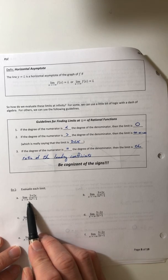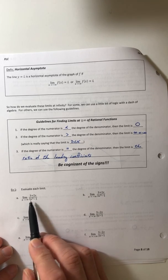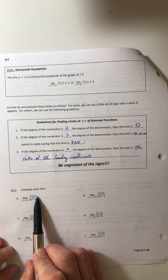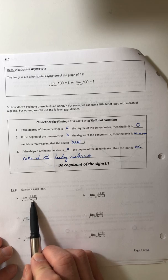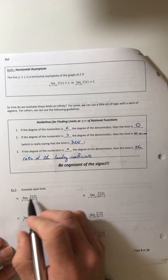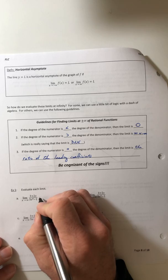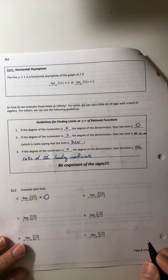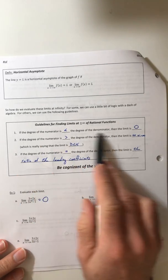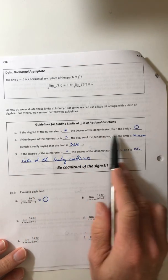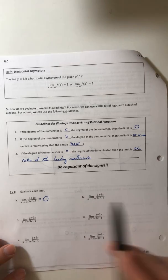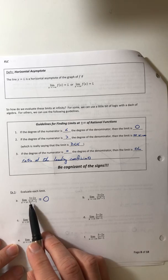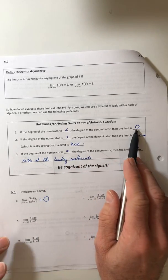All right, so the limit as x approaches infinity. If you look, the degree of the top is going to be one. The degree of the denominator is going to be three. So the denominator is the bigger degree. So that limit is going to equal zero. And if you look at the guideline, it doesn't say it matters if it's going off to negative infinity or infinity. You're just sticking with the degrees. And if the denominator is bigger, then it's just automatically zero.